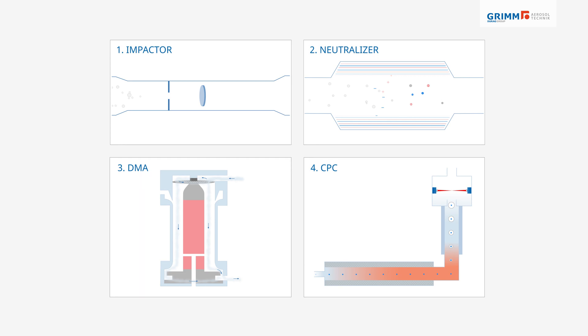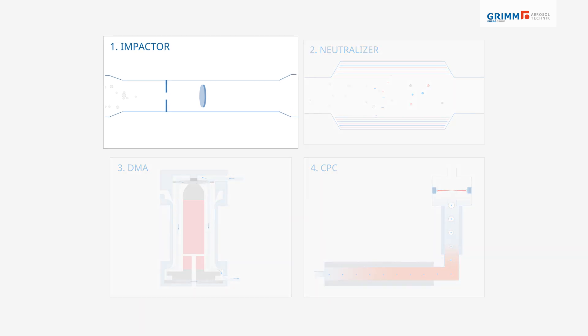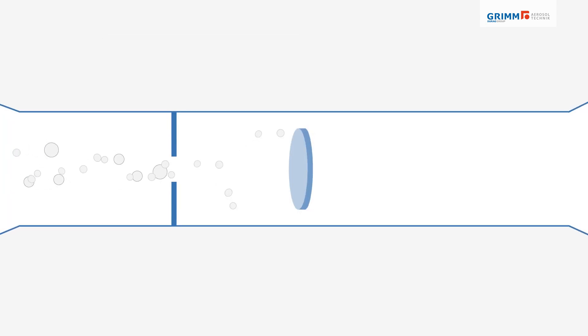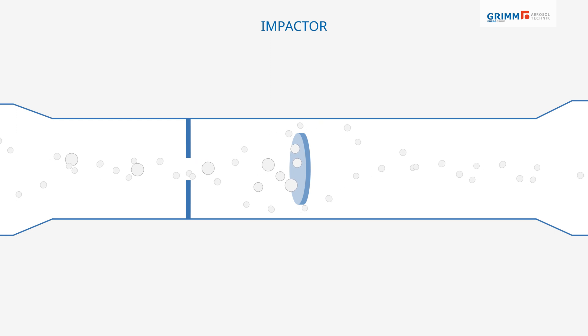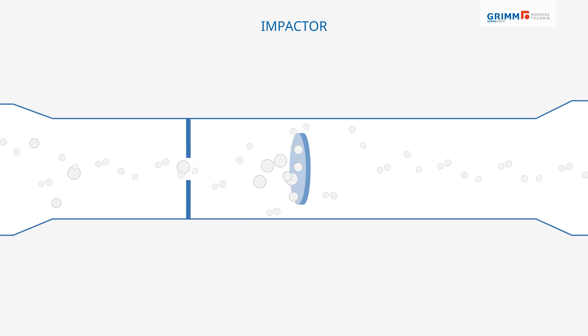The measurement principle includes an impactor. The impactor provides an upper size limit by removing larger particles.